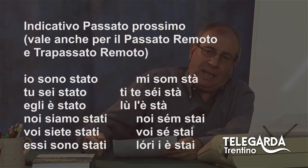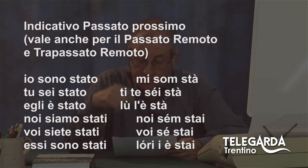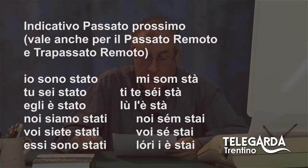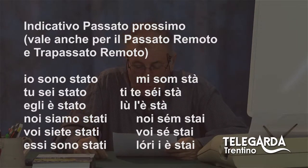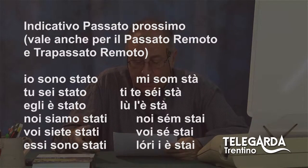Questi tre tempi in dialetto hanno un'unica forma. Io sono stato diventa mi som sta, sta con l'accento. Tu sei stato: ti te sei sta, con l'accento fonico chiuso. Egli è stato: lui le sta. Noi siamo stati: noi sem stai. Attenzione a questo bel 'stati': stai. Voi siete stati: voi se, con l'accento fonico chiuso, stai. Essi sono stati: lori i è stai. Quindi: mi son sta, ti te sei sta, lui le sta, noi sem stai, voi sei stai, lori i è stai.